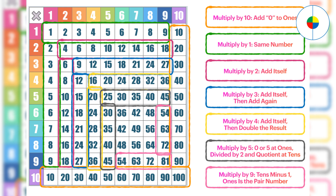Any number multiplied by 4, just add the same number, then double the result. Any number multiplied by 5: an odd number always has 5 in the 1's position, and an even number always has 0 in the 1's position. Split the number as close as possible, then the lower number should be in the 10's position. Any number multiplied by 9: the 10's position is the number minus 1, and the 1's position is its pair number, which is 10 minus the number.